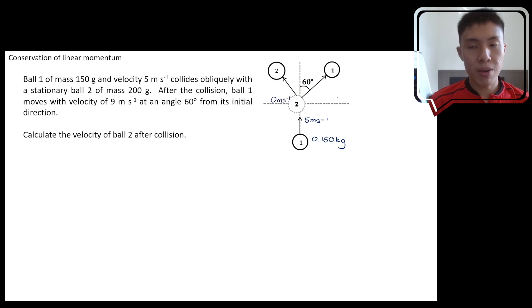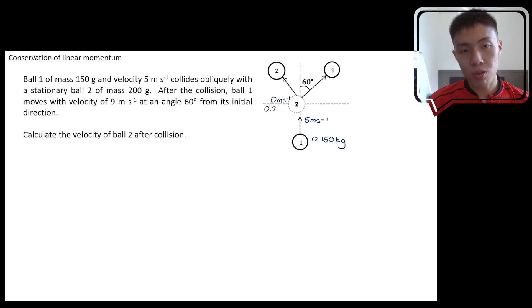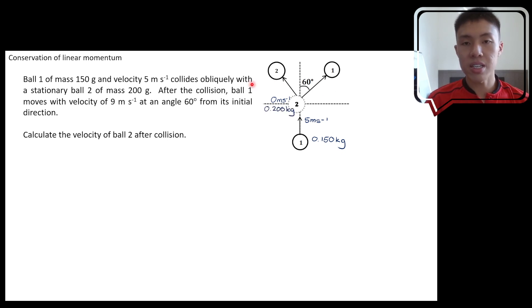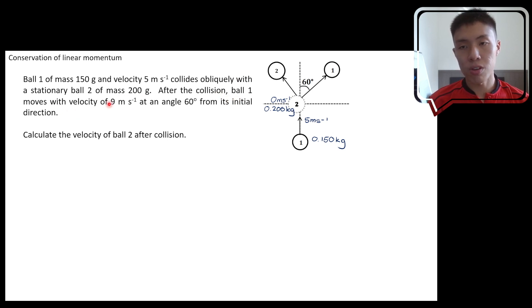Ball 2 has a mass of 200 grams, which is 0.200 kg. After the collision, ball 1 moves with a velocity of 9 meters per second at an angle of 60 degrees from its initial direction.